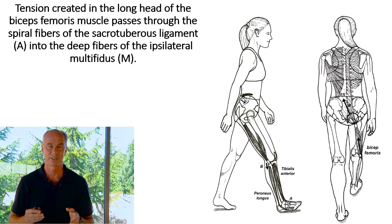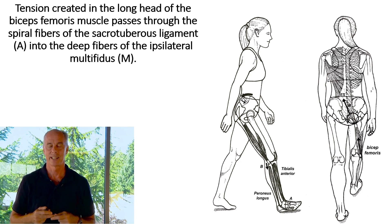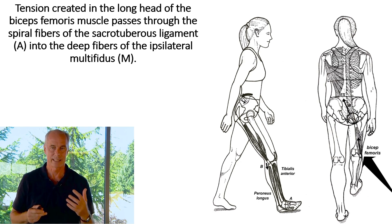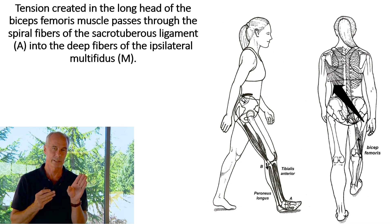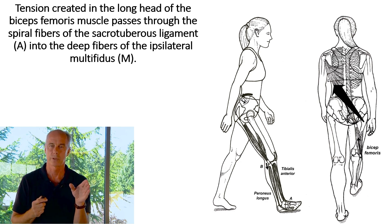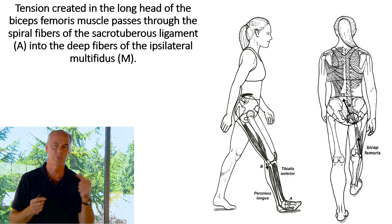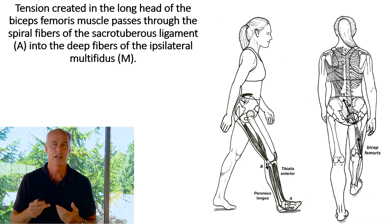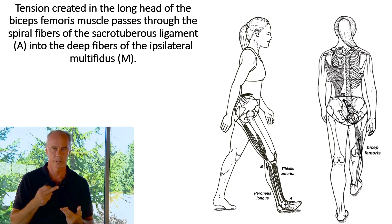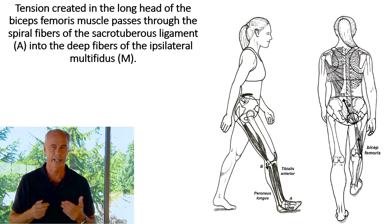Vleeming describes this mechanism: when running, the biceps femoris muscle is under peak tension just before heel strike, storing energy that then gets transmitted through the sacrotuberous ligament, traverses into the sacrum, crisscrosses over the multifidus and lumbodorsal fascia, and helps stabilize the sacroiliac and lumbosacral region. Contracture of biceps femoris or the sacrotuberous ligament can alter that.